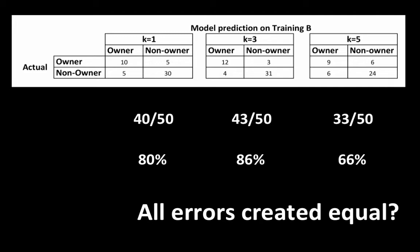If you classify a non-owner as an owner, you send the brochure by mistake, the person doesn't buy, and you incur the cost of the brochure. But what if you classify an owner as a non-owner — someone who's likely to buy the product, but your algorithm says they won't? You don't send them the brochure and they don't buy your product. You saved a couple of bucks on the brochure, but you might have made a profit of $25 if they had bought. So the cost of classifying an owner as a non-owner can be much higher — you have asymmetric costs.